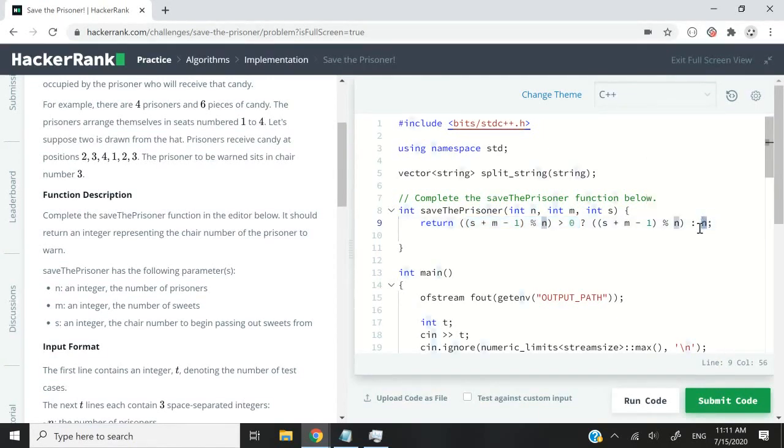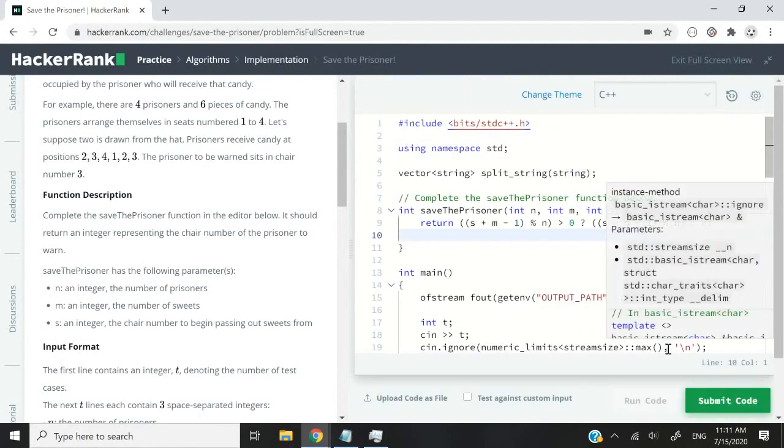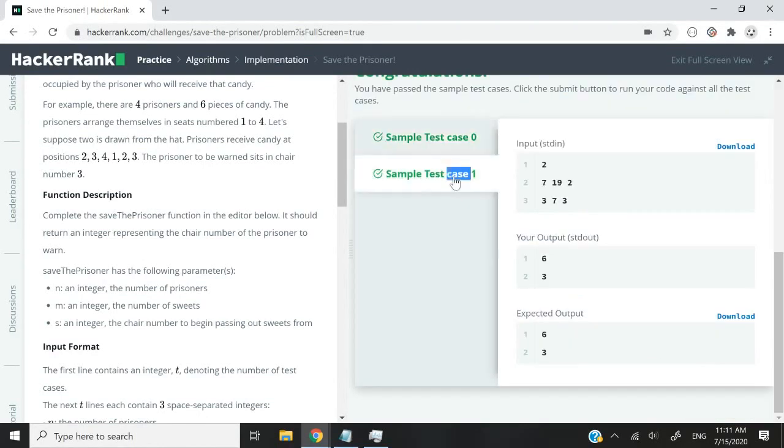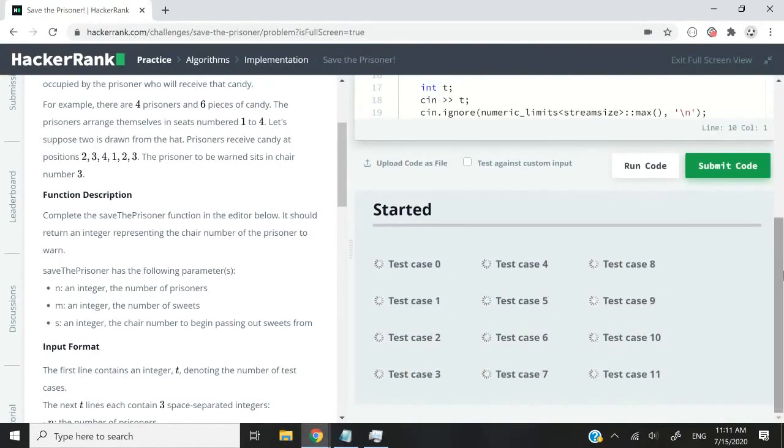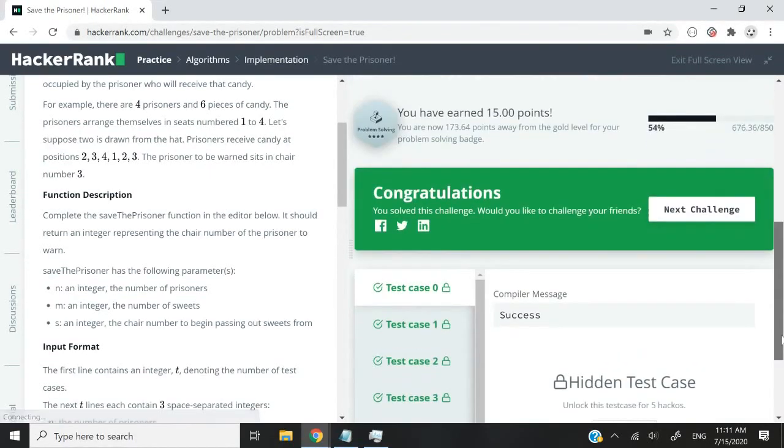You can rewrite this if you want as an if-else statement, or you can introduce a variable and store the result here, like ending result equals this, and then compare. If you want to make your code a bit cleaner. Anyway, let me now run this code and make sure we got the logic correct. We pass sample test case zero and also sample test case one. Now let's submit this code and we should be able to pass all 12 test cases from zero to 11. And we just did.